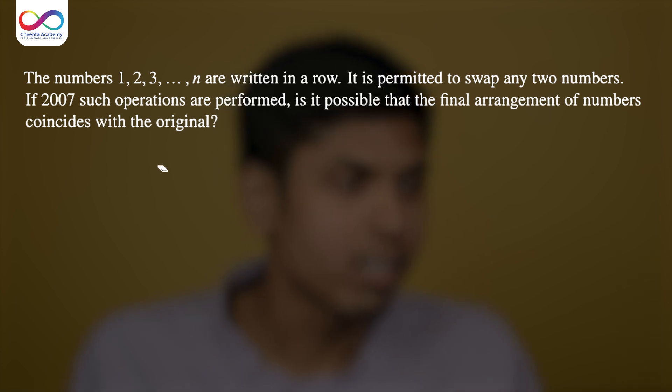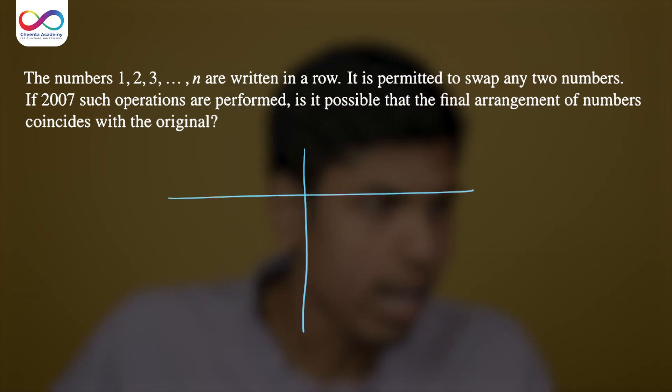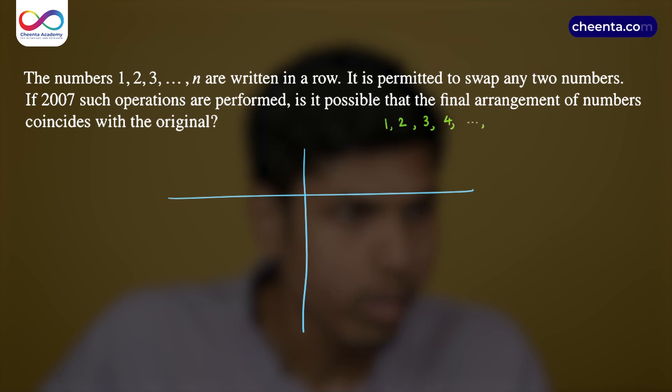When I see this question, I think about the parity of the number given. 2007 is an odd number. So we could do something with the odd number of 2007. To proceed, let us consider two columns and we first consider the order of the numbers as 1, 2, 3, 4 till n-2, n-1 and n.